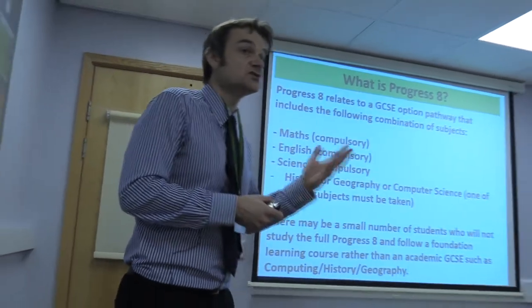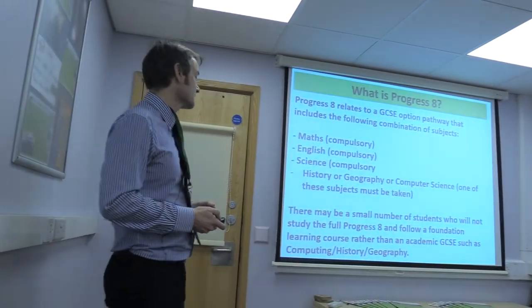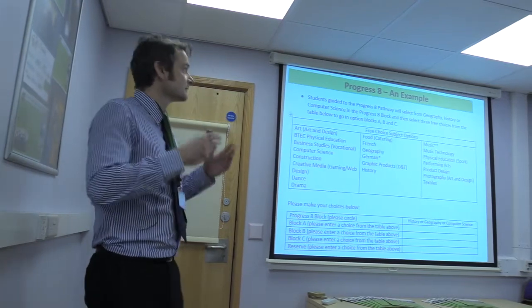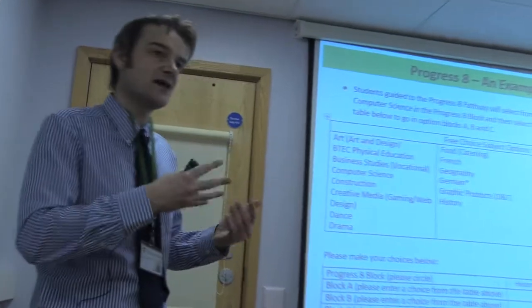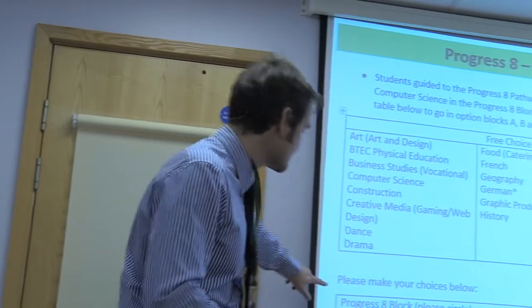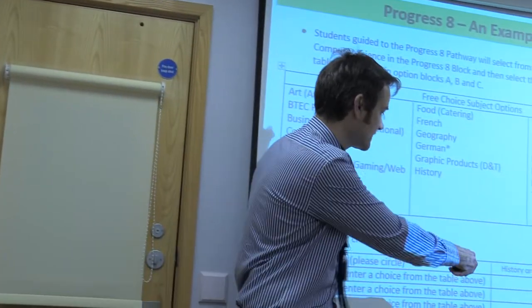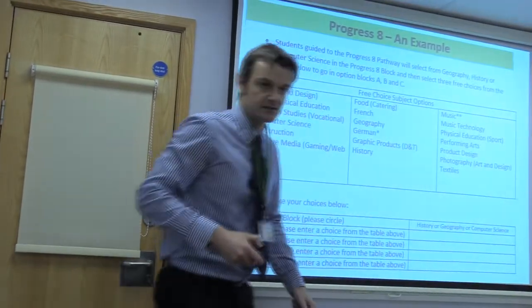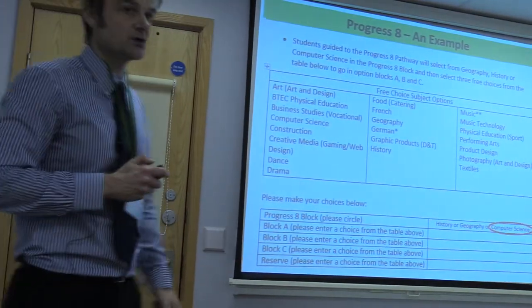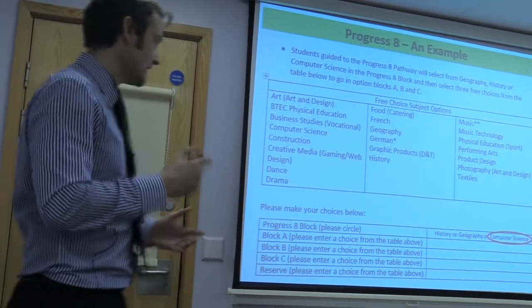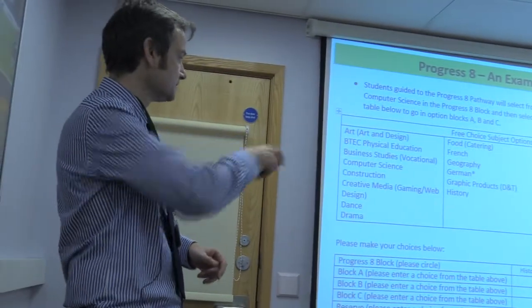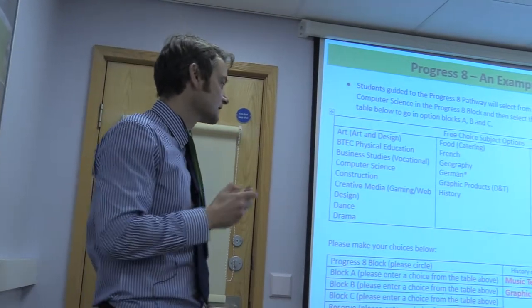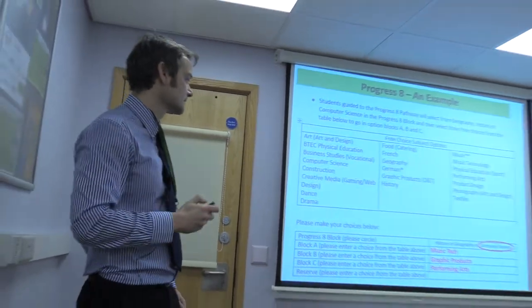They also have three other option choices available to them. Very similar to the EBAC, it will be colour-coded, and students will be aware of which pathway they have been suggested to go on. In the Progress 8 block, we have History, Geography, or Computer Science. This student has decided to go down the Computer Science route. They then have three free options — they've gone for Music Tech, Graphic Products, and Performing Arts, with Creative Media as their reserve choice.